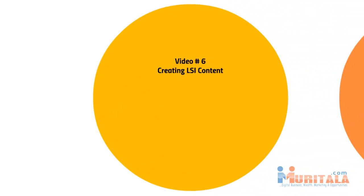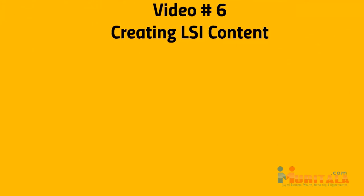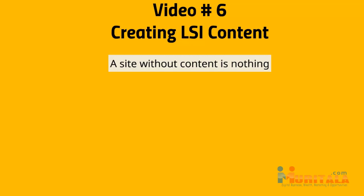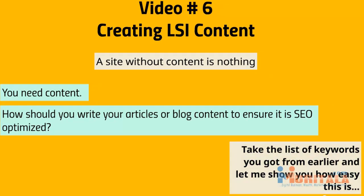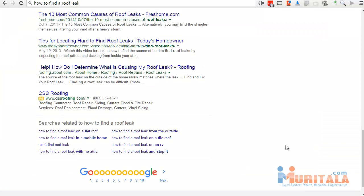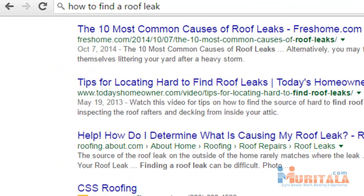Hello and welcome back. This is video number six, and we are going to talk about creating LSI content — keyword and search engine friendly content. A site without content is nothing. We talked about site structure in the previous video; now we're going to talk about filling it in with content. The big question is: how should you write your articles or blog content to ensure that it is SEO optimized? It's going to be super easy, but we're going to take the list of keywords that you got from earlier. Before we create the content, I want to show you a specific method to create the content structure.